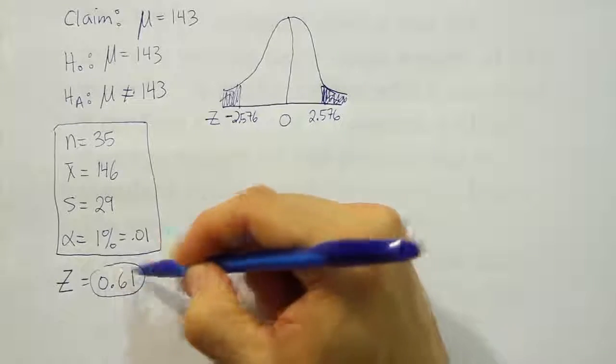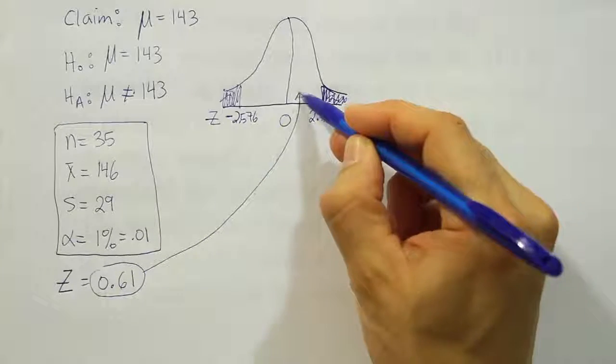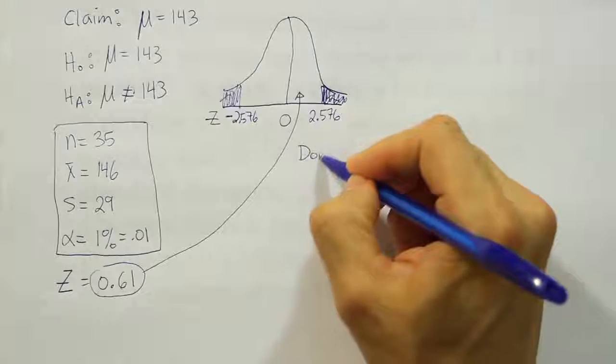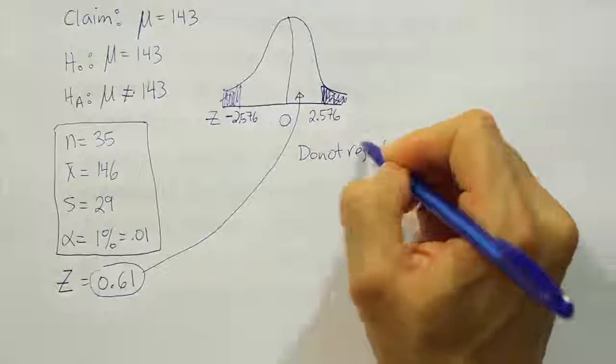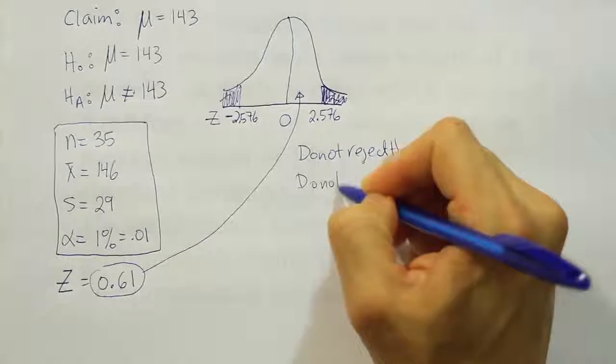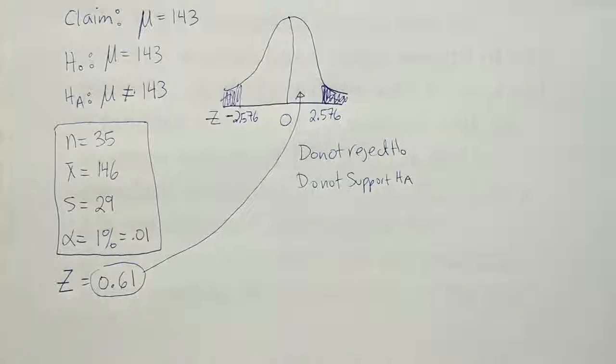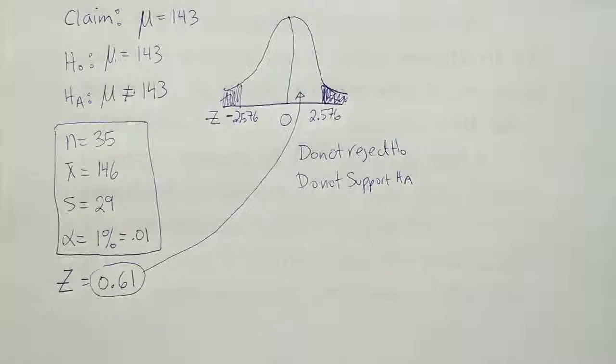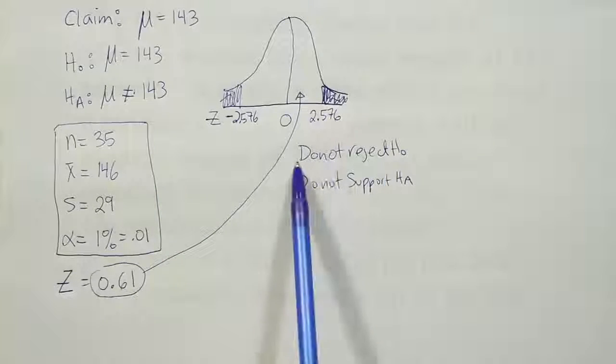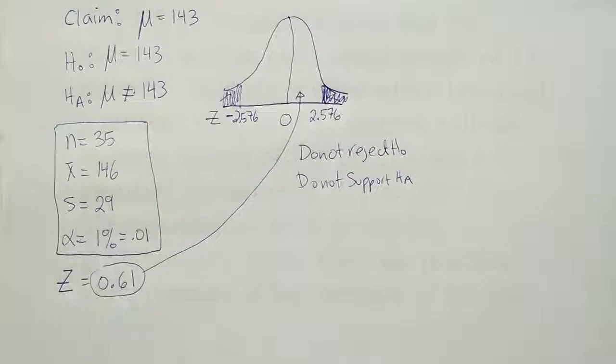Now if you look at our test stat and where it lands, you can see that it lands around here. So we're going to say that we do not reject H0, and therefore we do not support HA. And then of course we'd finish the problem based on that. So our claim was H0. So when we say we do not reject H0, that means we do not reject the government's claim. So this data does not allow us to reject the government's claim. So basically we're saying that we'll allow the government's claim to stand. We'll assume that it's still correct. So we're going to say that essentially we believe that the average woman in America weighs 143 pounds.